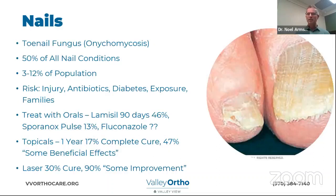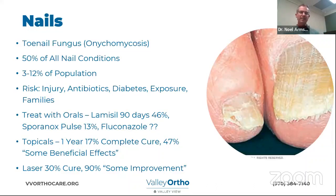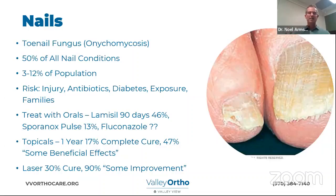Another very common question is toenail fungus — when the nail becomes brittle, chalky, powdery, ridged, elevated, and sometimes quite uncomfortable. Toenail fungus affects 3 to 12% of the overall population, and that percentage is much, much higher as the population ages.